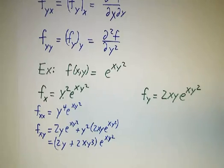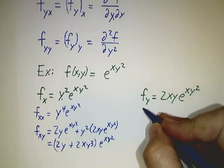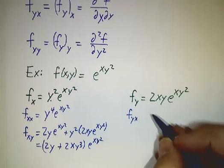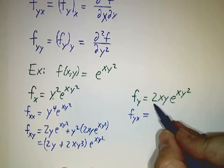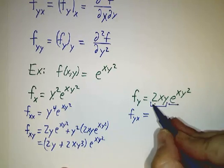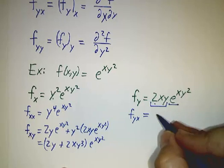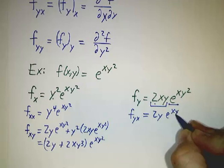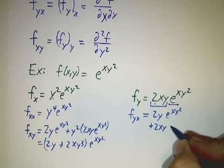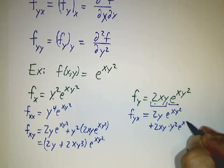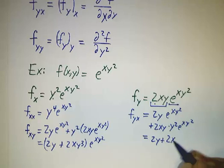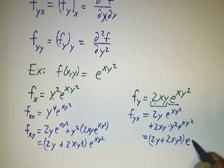Now we can also take the derivative of f_y with respect to x, which is f_yx. We do this by the product rule: the derivative of 2xy with respect to x is just 2y, and then we have 2xy times the derivative of e to the xy squared with respect to x, which is y squared e to the xy squared. That gives us (2y + 2xy³) e to the xy squared.